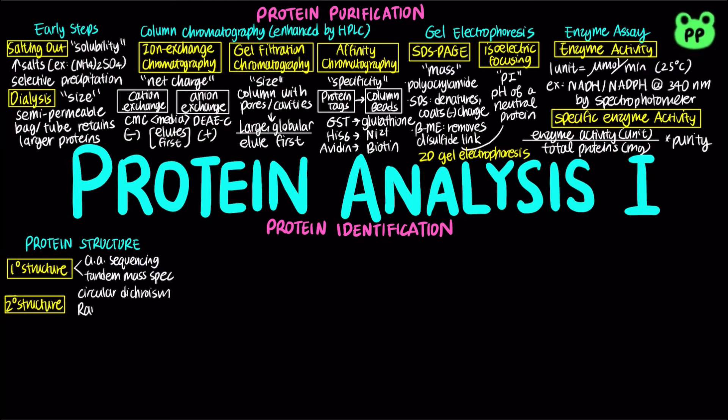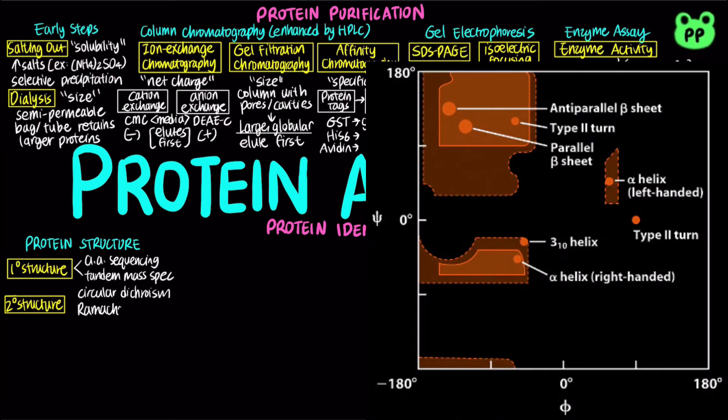Secondary structure can also be measured by the Ramachandran plot, which describes the dihedral angles phi and psi associated with each amino acid residue. Both alpha helix and beta conformations have dihedral angles that fall within a relatively restricted range of sterically allowed structures.